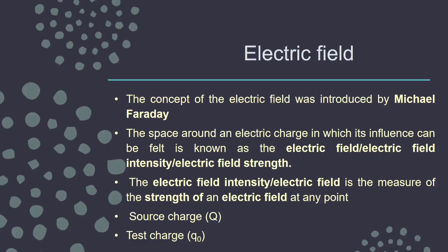The definition can be written like this: the space around an electric charge in which its influence can be felt is known as the electric field. The terms we will use in coming lectures — electric field intensity or electric field strength — have the same meaning as electric field. Basically, electric field intensity or electric field strength is the measure of the strength of the electric field at any point.